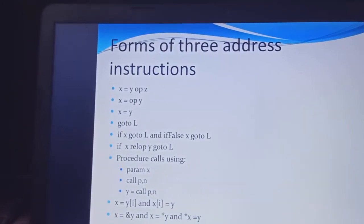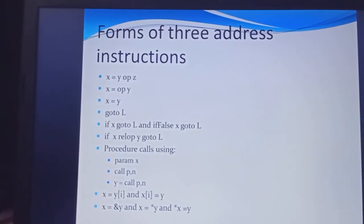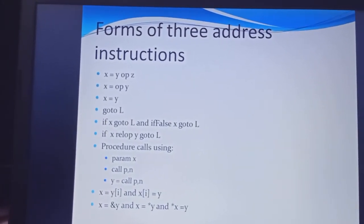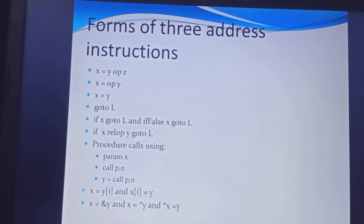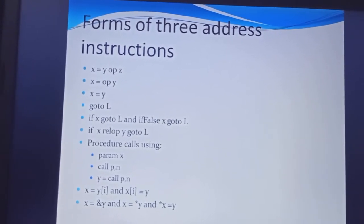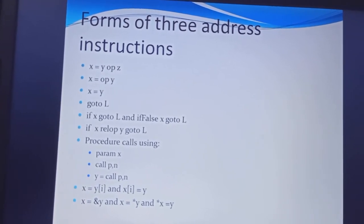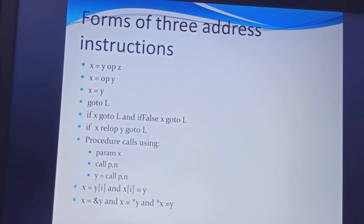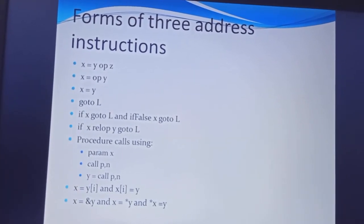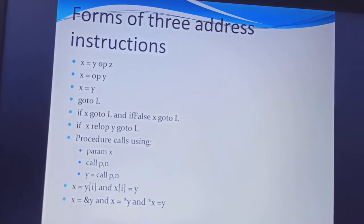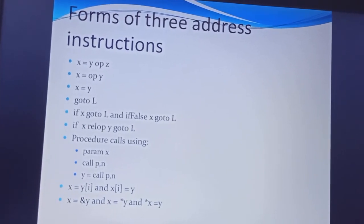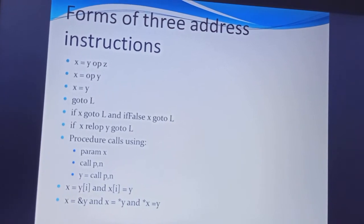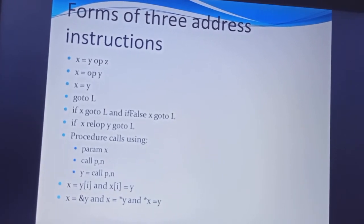The forms and instructions of three-address code include: X = Y op Z; X = op Y (unary); X = Y then go to L; if X go to L; if X relational-op Y then go to L (e.g., X <= Y or X >= Y); procedure calls using parameter X; call P, N; and array/pointer assignments.